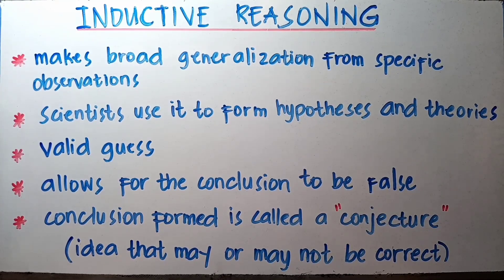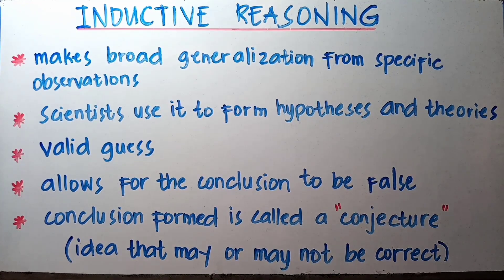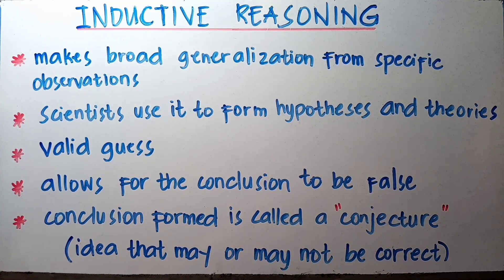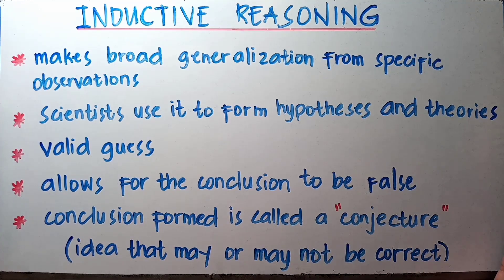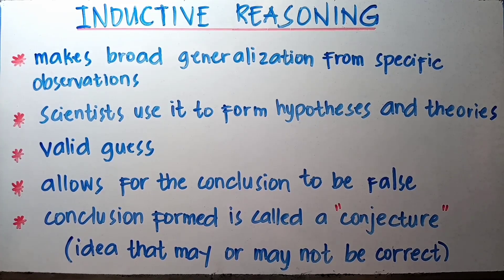Another definition: scientists use inductive reasoning to form hypotheses and theories. It is also known as a valid guess. It allows for the conclusion to be false, and the conclusion formed is called a conjecture. So in inductive reasoning, there are times that the conjecture or conclusion you come up with may not be correct — it may or may not be right, depending on your reasoning and observations.